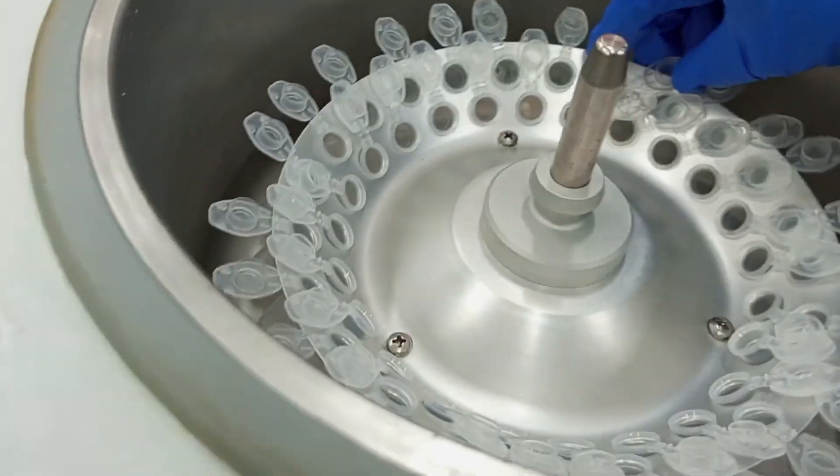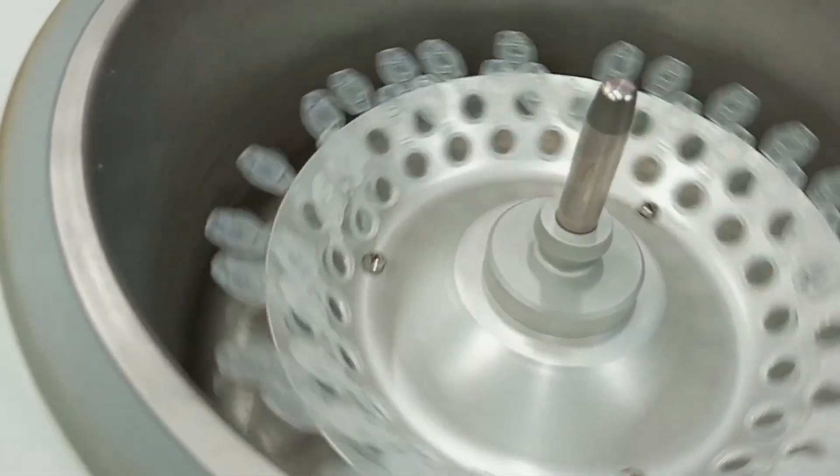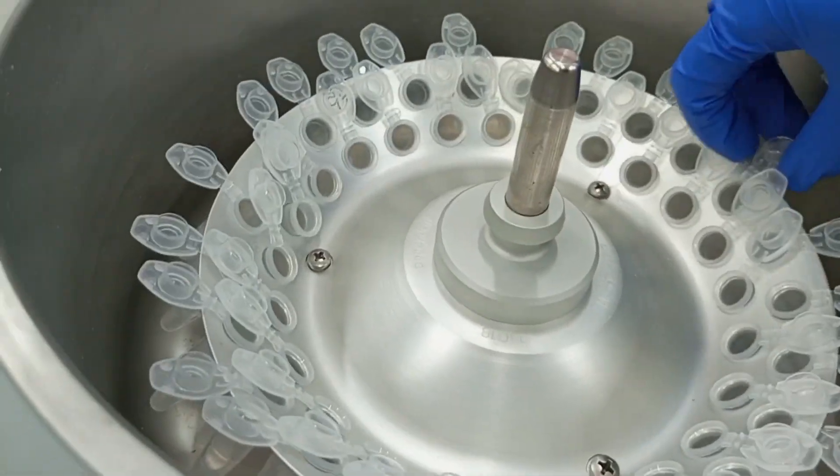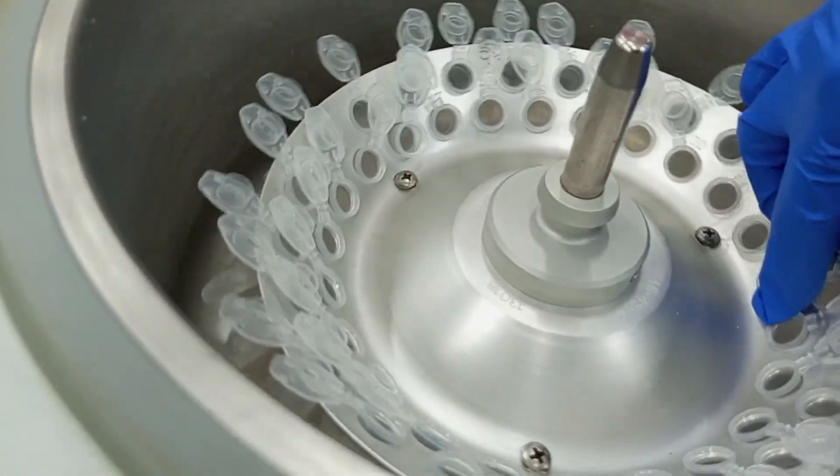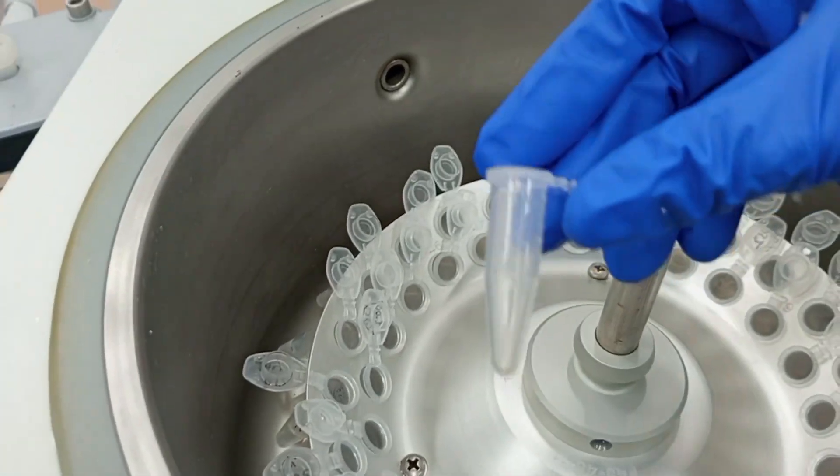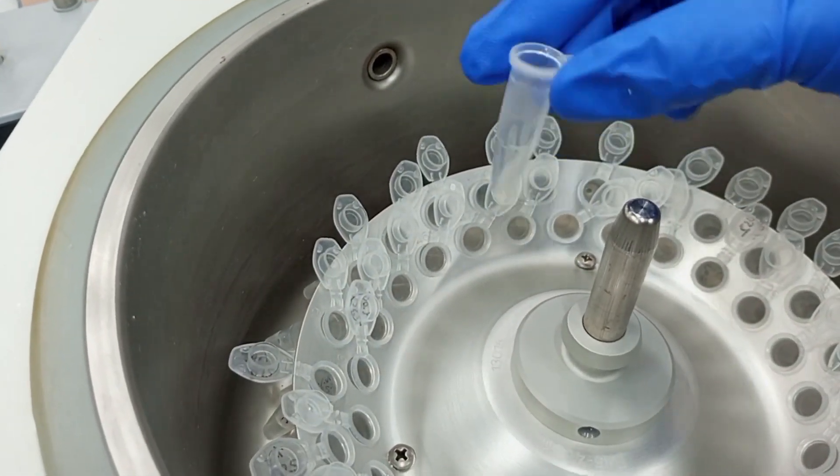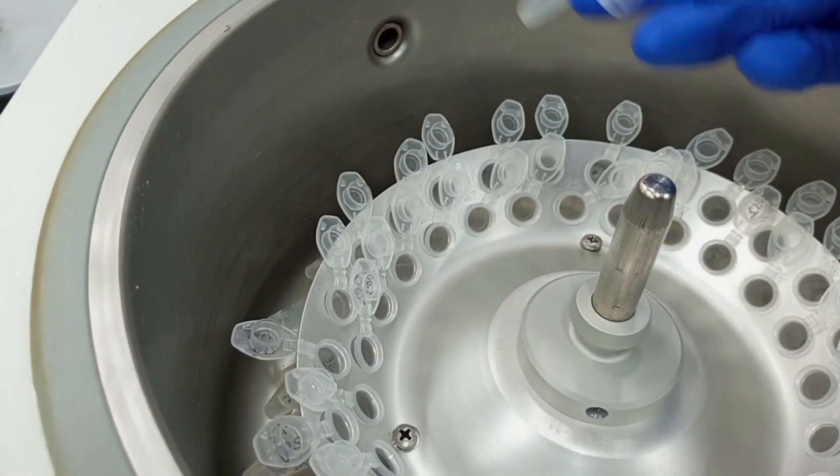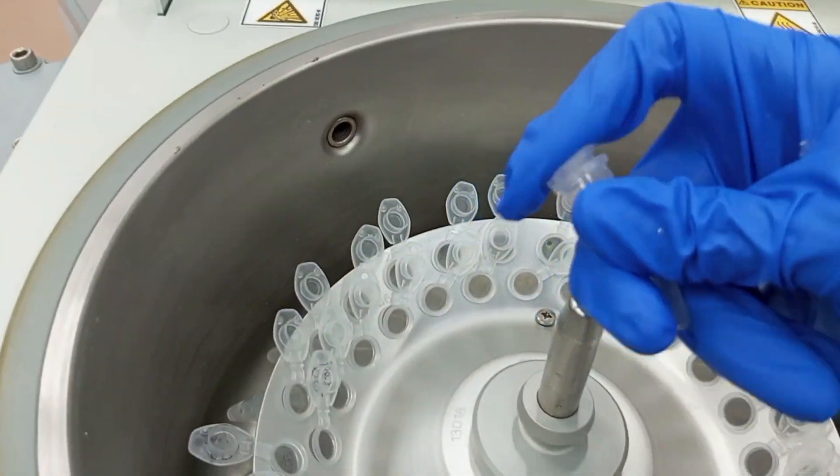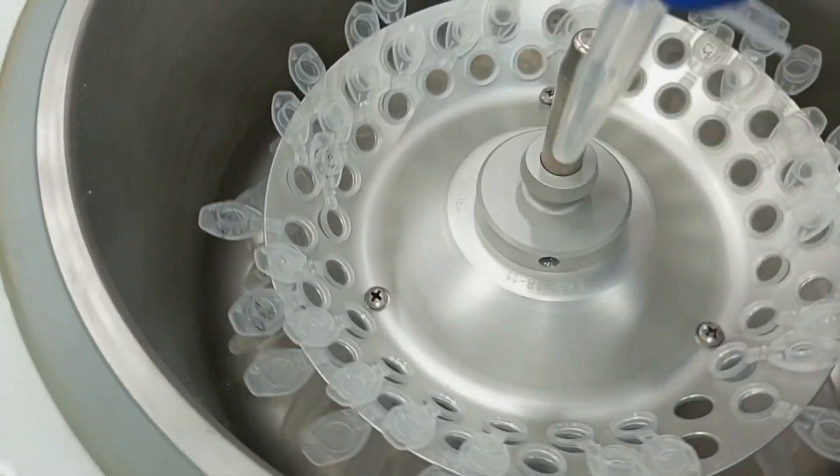When the concentration time is over, remove the MCTs after closing the lid of these MCTs. Here you can see the solvent has evaporated and my compound is present in the bottom of the tube. It might not be visible for you. Anyways, this is how you can concentrate your sample using this instrument. Thanks for watching.